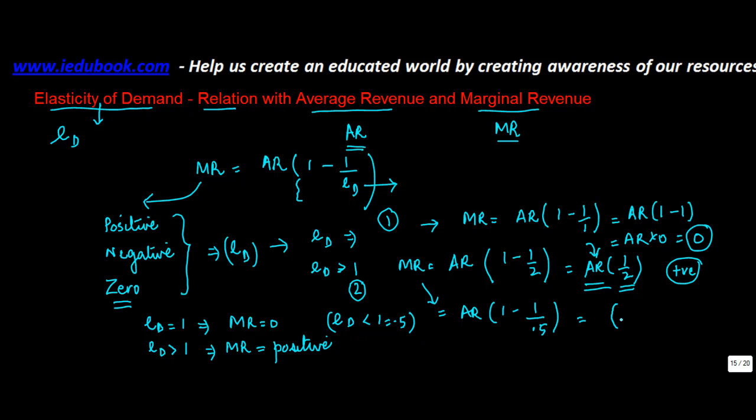So if you solve this, you will get 1 minus, remove the point, put a 0 here, 5 goes into 10 two times, so 1 minus 2 will give you minus 1 into average revenue, which has to be a positive number. So this is negative. So we say when ED is less than 1, MR is negative.